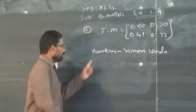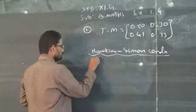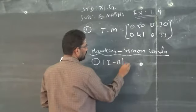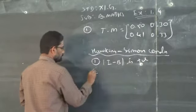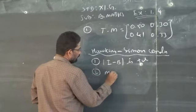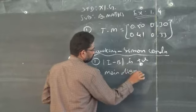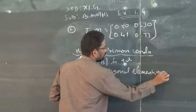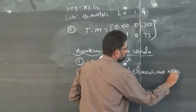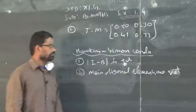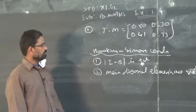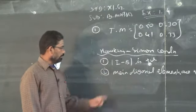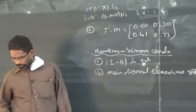What are the Hawkins-Simon conditions? There are two conditions. Condition one: the determinant of I minus B must be positive. Condition two: the main diagonal elements of I minus B must be positive. Both these conditions must be satisfied.